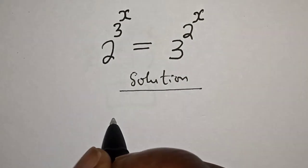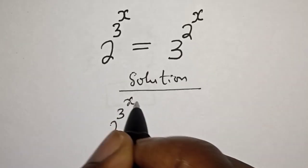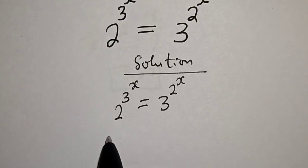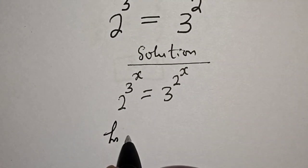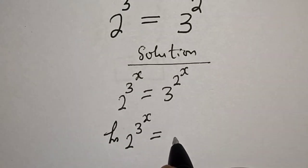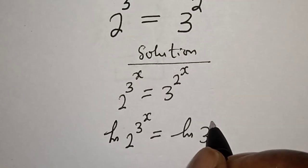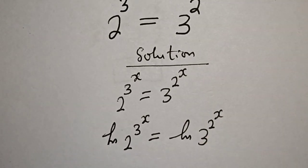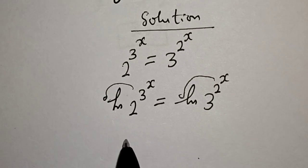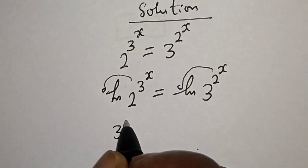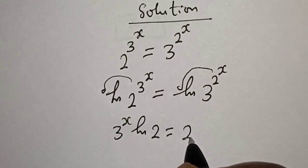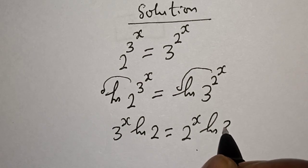We have the given equation: 2 raised to power 3 raised to power s is equal to 3 raised to power 2 raised to power s. Let's take the natural log of both sides. Natural log of 2 raised to power 3 raised to power s is equal to natural log of 3 raised to power 2 raised to power s. Then let's bring the exponents down: 3 raised to power s times natural log of 2 is equal to 2 raised to power s times natural log 3.